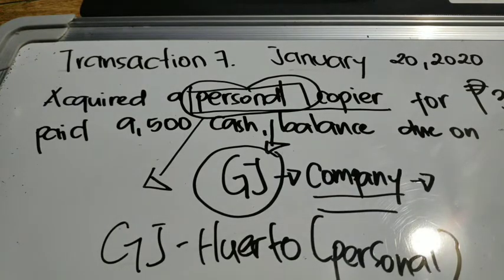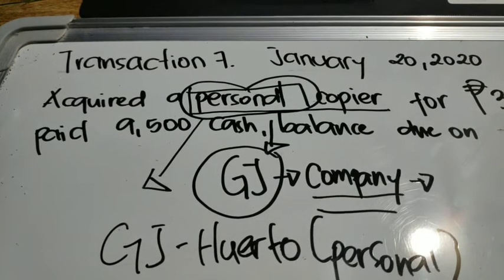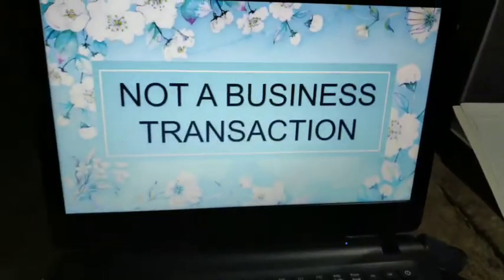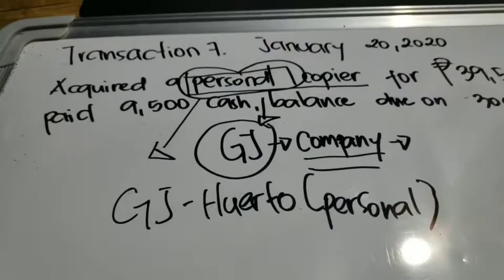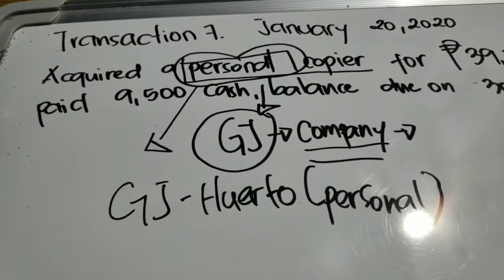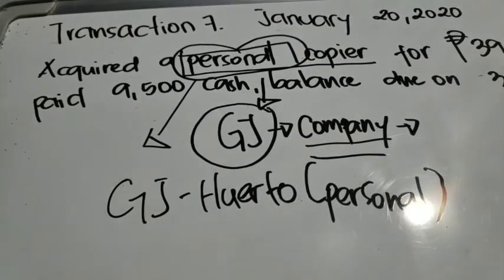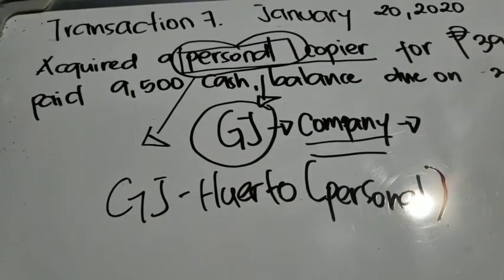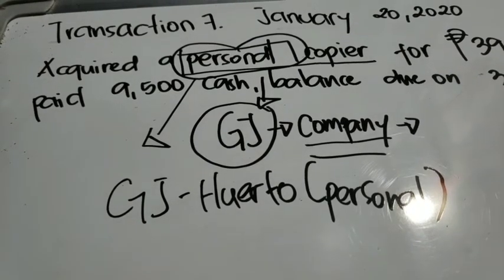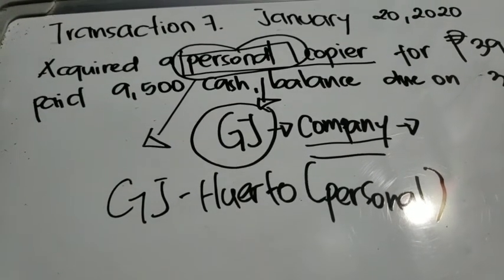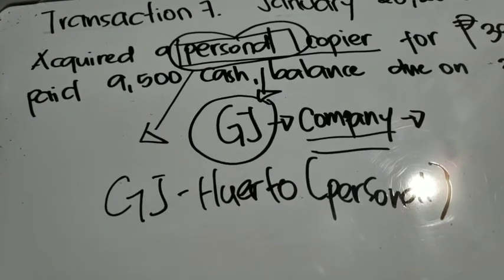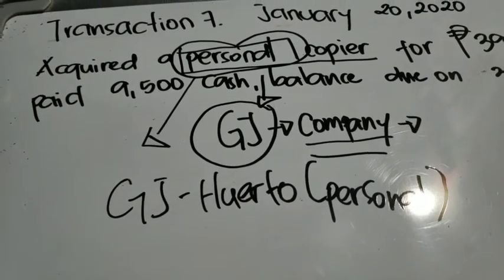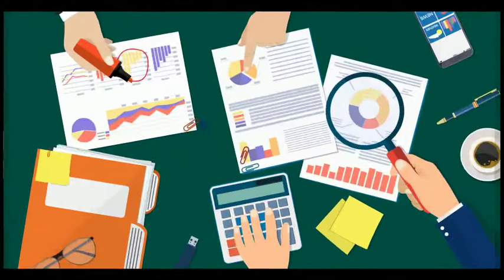Because the word 'personal copier' appears, you are not allowed to record it in the company's general journal — that is why it is classified as not a business transaction. I hope you learned something about how to identify whether a transaction is a business transaction and whether it is allowed to be recorded in the general journal. Thank you very much for watching, see you in the next video!